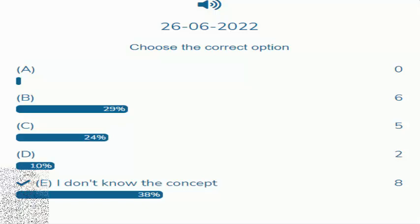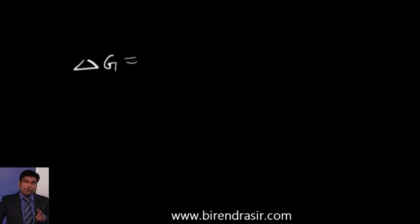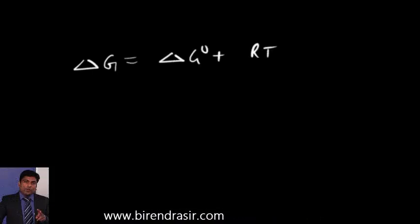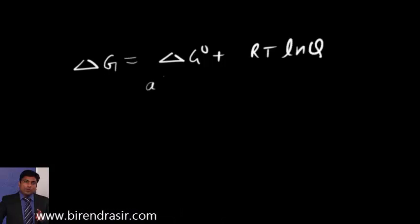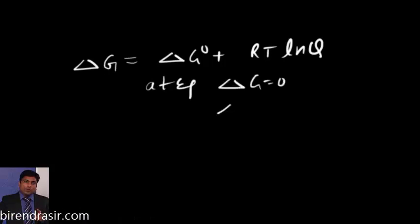Let's see what is the correct answer. Delta G is equal to delta G0 plus RT ln Q. Now, at equilibrium, delta G is equal to 0. So delta G0 is equal to minus RT, and at equilibrium that Q reaction quotient will become K equilibrium.